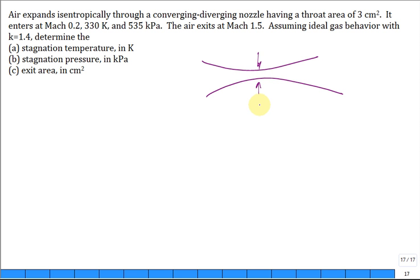And the throat area, and I often use an asterisk for the critical pressure, critical temperature, that critical or throat area, is three centimeters squared. It enters someplace right in here. It's state one, and the Mach number at one is 0.2, the temperature at one is 330 Kelvin, and the pressure at one is 535 kPa.